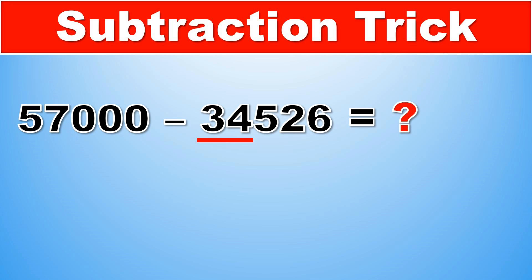As we look at the first part, 34, add 1, and then subtract that from the first part of the other number. This means we have 34 plus 1, which is 35, and then we subtract it from 57. So 57 minus 35, which is 22.